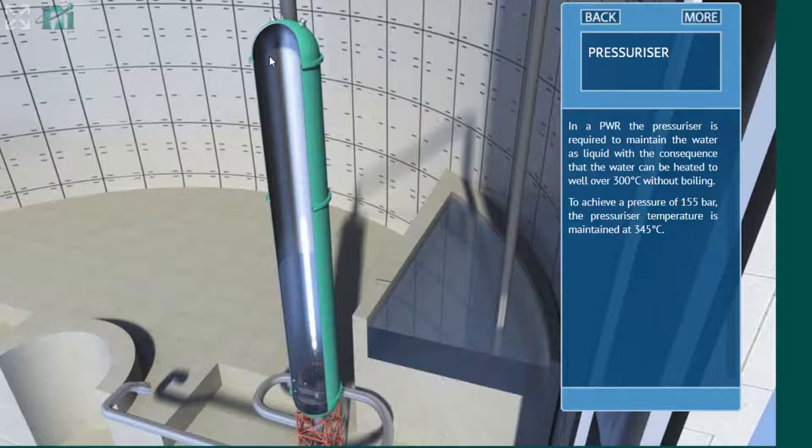This creates vacuum that sucks water from the primary to increase this level and reduces the pressure. So these are the two tools that we have. Sorry, I forgot to say there are also heaters. So there are heaters that work with electricity, so like a big electric radiator here.